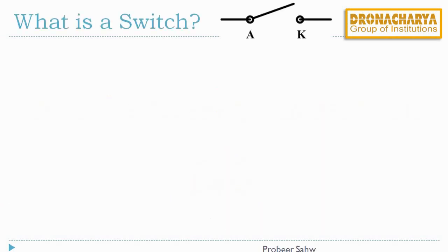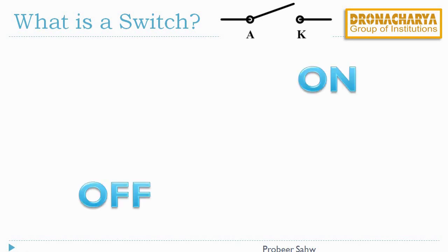Switches are used to control electrical and electronic devices and appliances. A switch can either be in the off state or on state. When it is off, the electrical or electronic devices draw no power from the source. When it is on, the appliances or devices draw some power from the source.